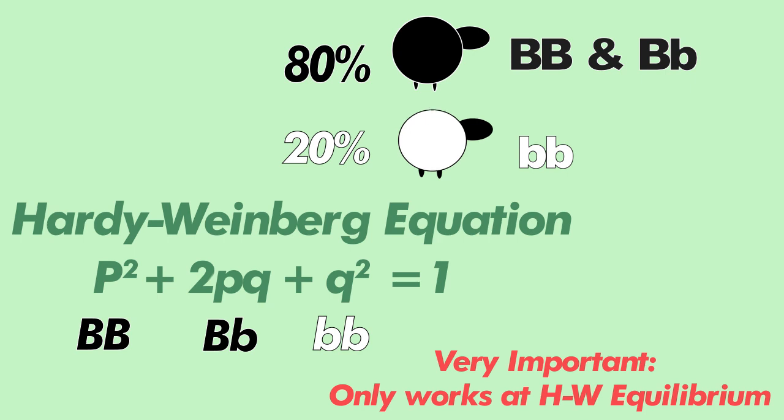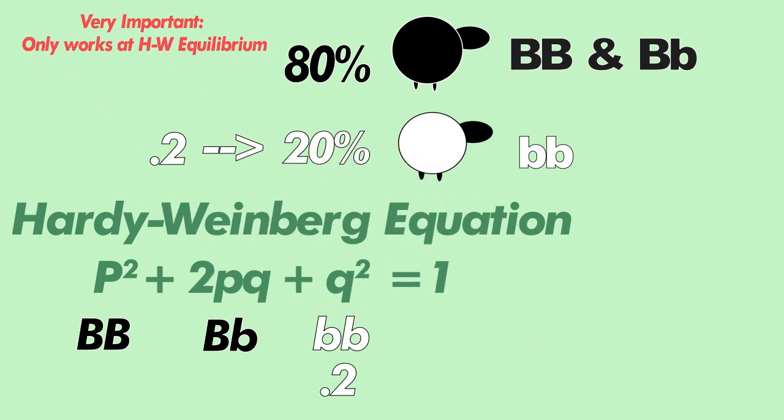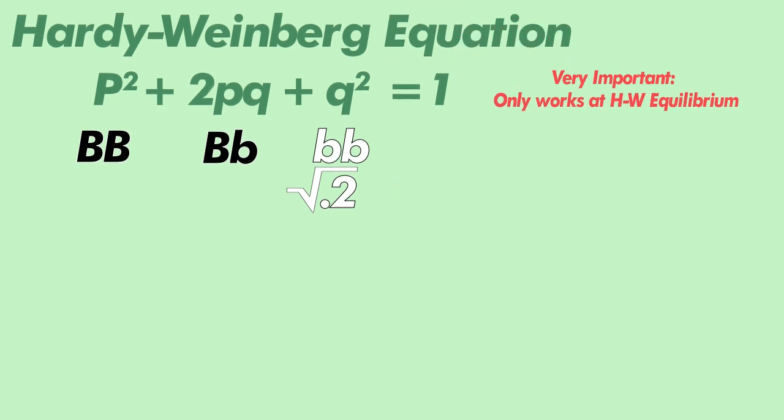Going back to our sheep, we know we have 0.2 representing our q² homozygous recessive trait being white sheep. So we set q² equal to 0.2. We then take the square root of that and get roughly 0.45. q is the frequency of our recessive allele.